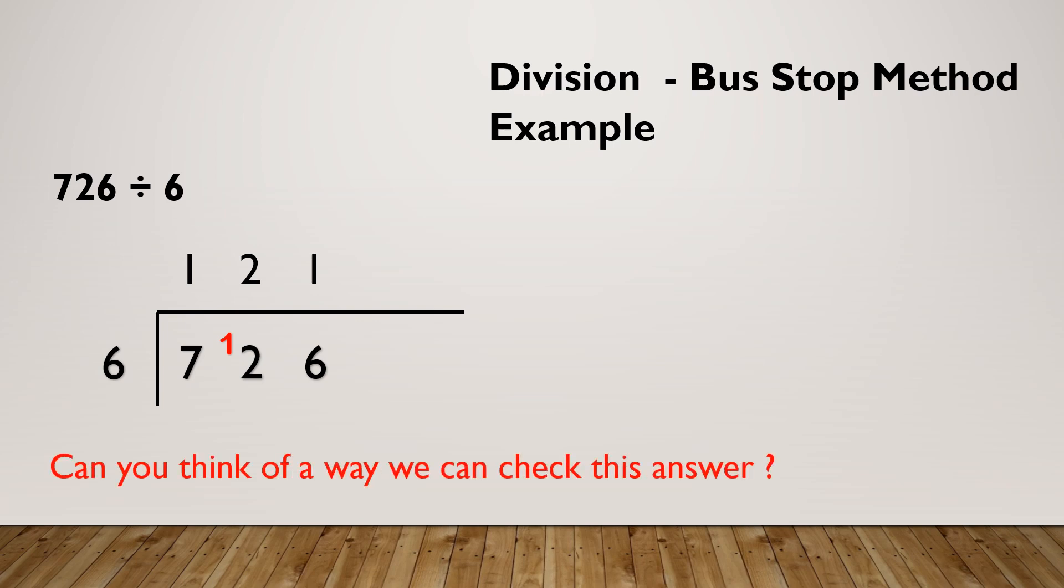We could check this answer by multiplication. Multiplication is the inverse of division, so it's the opposite. If I wanted to check something was right, I could do the opposite. If I were to do my answer multiplied by 6, I should get back to where I started from. 6 times 1 is 6, 6 times 2 is 12, 2 down carry the 1, 6 times 1 is 6, add my 1 is 7. So I get back to where I started, so it must be right. Check out my video on multiplication if you need to.